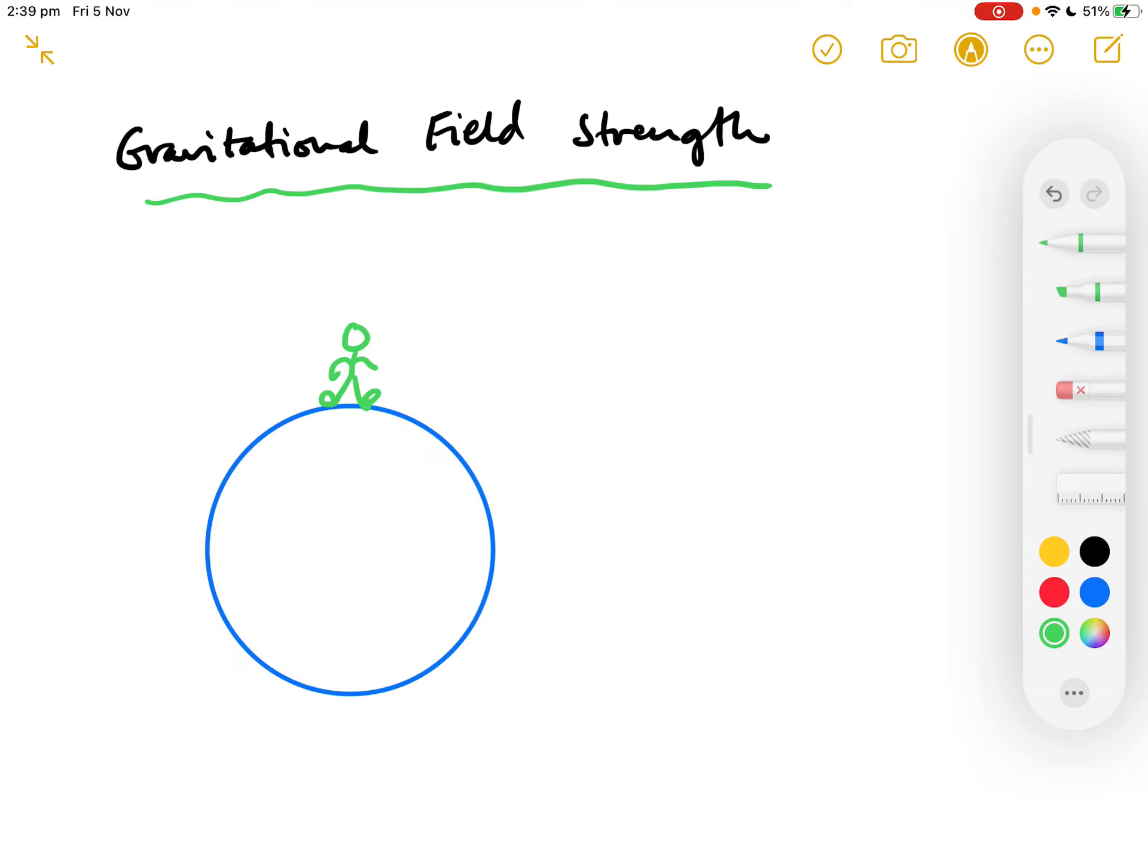So, if we draw a free-body diagram for that person, the force with which the planet is pulling them down is, of course, called weight.